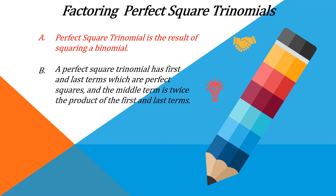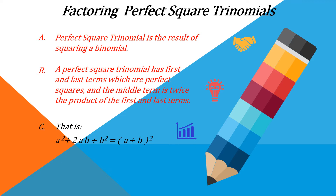A perfect square trinomial has first and last terms which are perfect squares, and the middle term is twice the product of the first and last terms. That is, a² + 2ab + b² is equal to the quantity (a + b) squared, which is the product of the binomial (a + b) multiplied by (a + b), giving the result a² + 2ab + b².